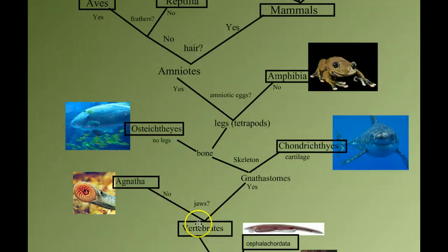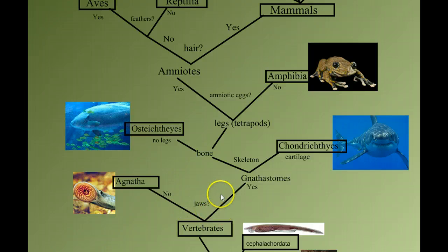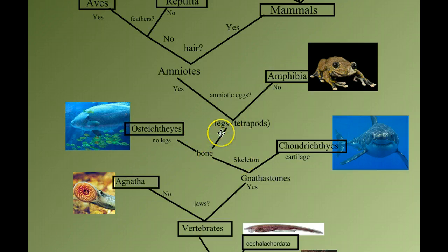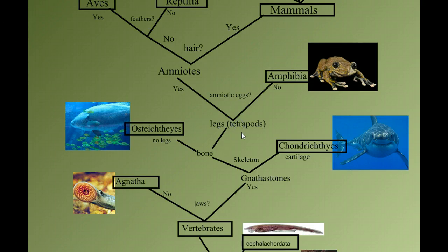As we've been working our way up through the vertebrates, the first major evolutionary advancement was the gaining of a jaw, and then a bony skeleton. And now we're going down this branch of those vertebrates with a bony skeleton that have legs — our tetrapods, four limbs.